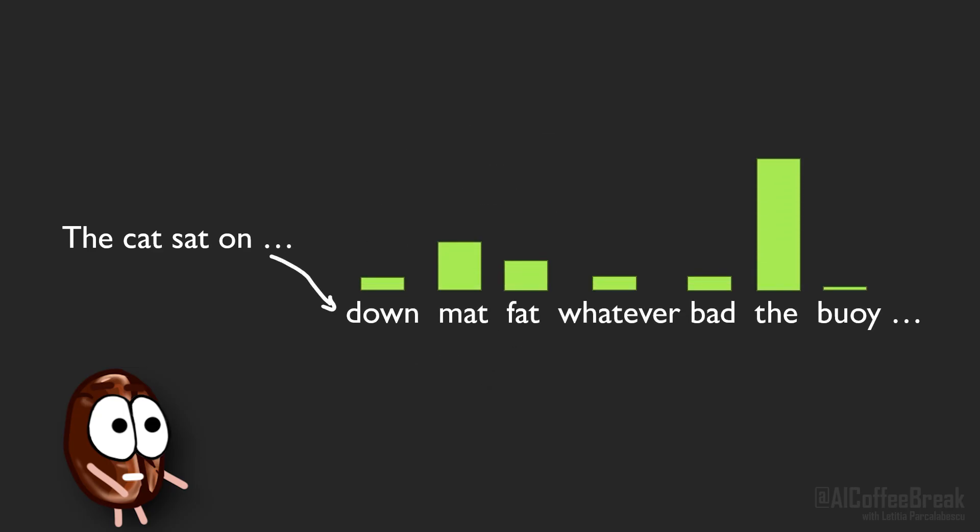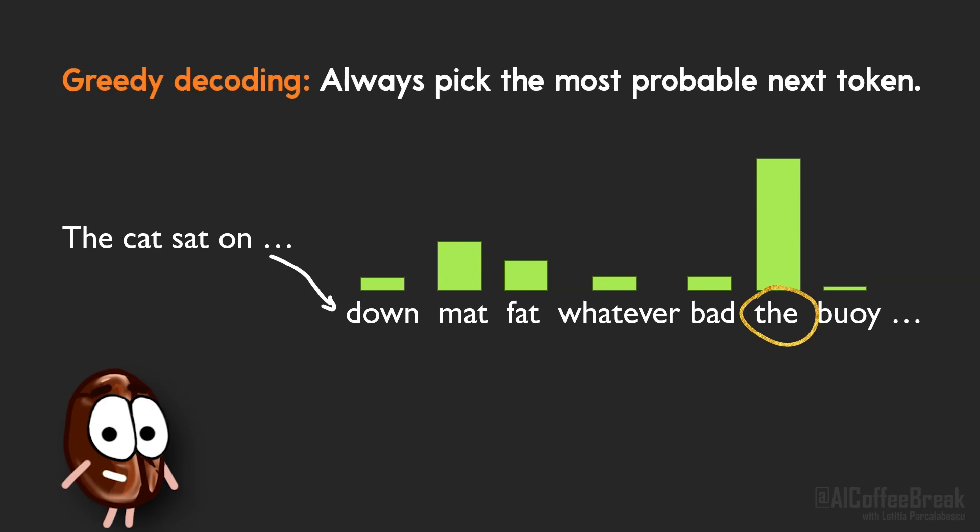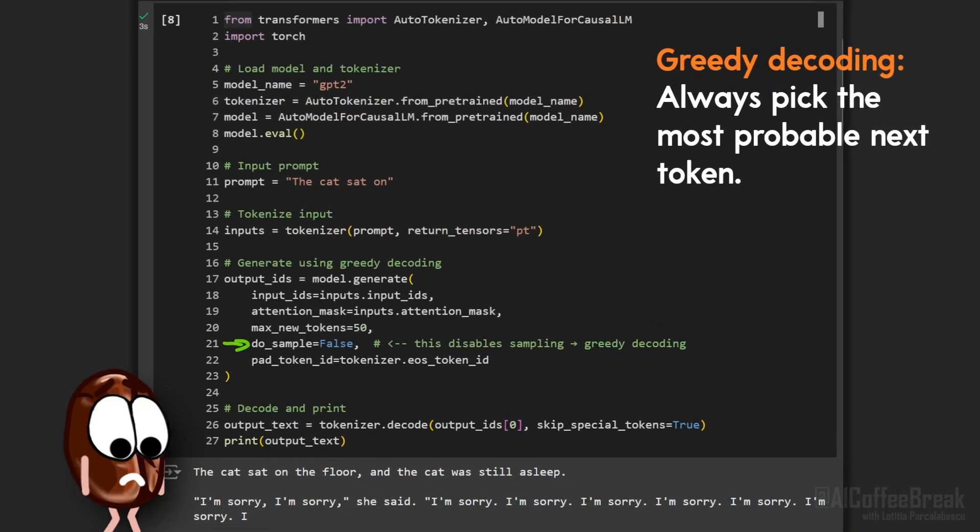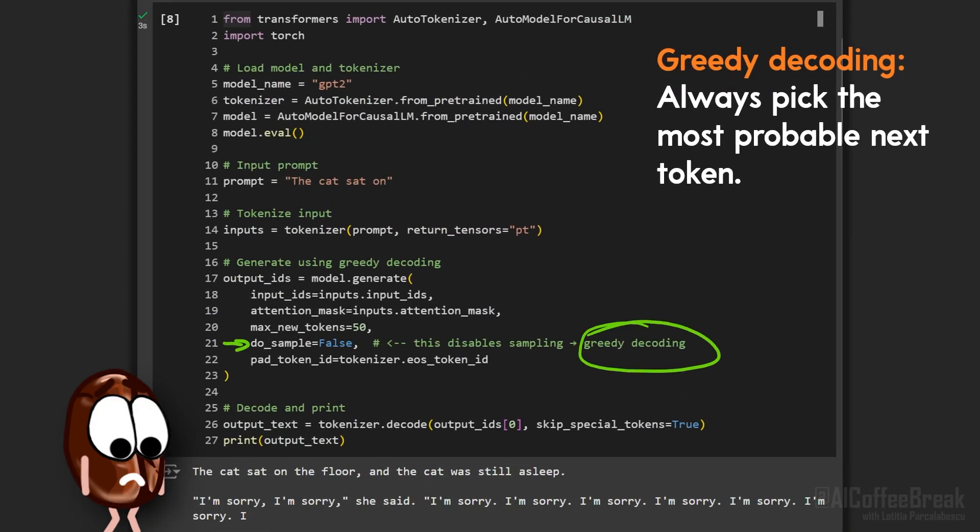We have this nice probability distribution. Why not just always pick the token with the highest probability? That's what the greedy decoding method does. It always picks the most likely next token. It's simple, fast, and deterministic. It's deterministic because the LLM for the same input will always produce the same probabilities, their scores, so it will always be the same token which has the highest probability. But greedy decoding is not a very good algorithm, because the most probable token isn't always the most interesting one, especially over long sequences.